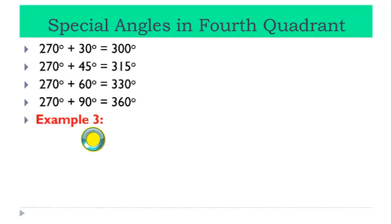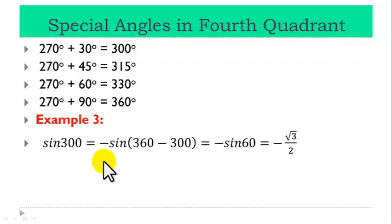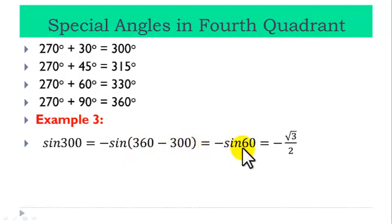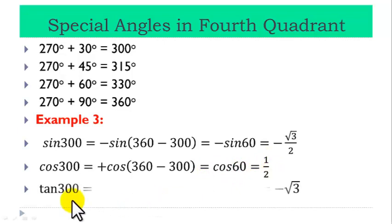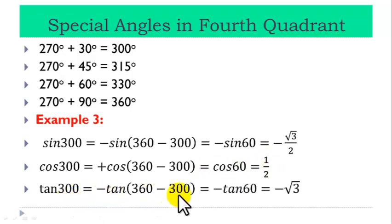Example 3: Let us find the trig ratios for 300 degrees. Recall, sine and tangent are negative in the fourth quadrant, and only cosine is positive. To obtain the trig ratio, we subtract the given angle from 360. Sin 300 equals minus sin of (360 minus 300), which equals minus sin 60, and that equals minus root 3 over 2. Cos 300 equals plus cos of (360 minus 300), which equals cos 60, and that equals one half. And tan 300 equals minus tan of (360 minus 300), which equals minus tan 60, which equals minus root 3.